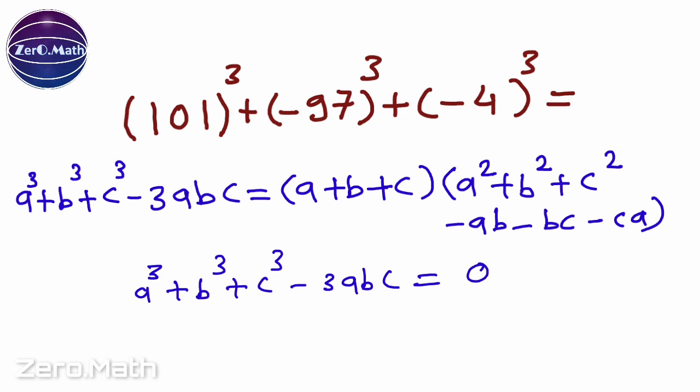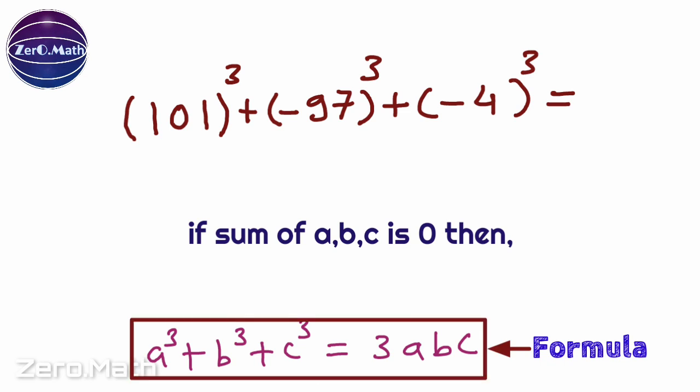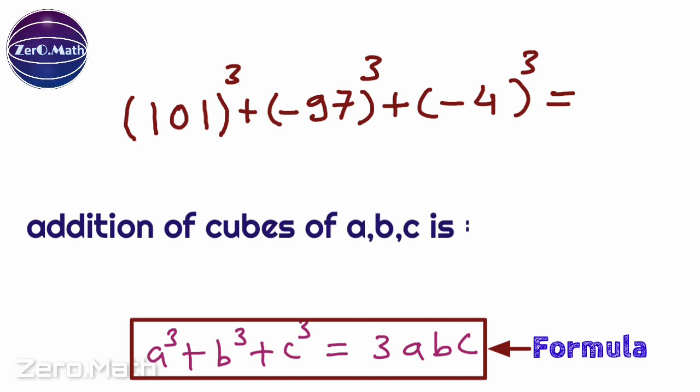If I rewrite this equation, it will be a³ + b³ + c³ equals 3 times abc, which means if a, b, c are the numbers which give zero as a result when added, then the addition of the cubes of a, b, and c is obtained by multiplying abc by 3.